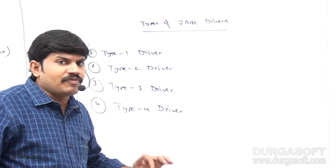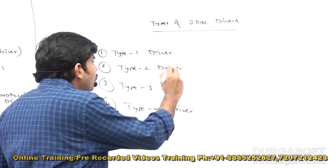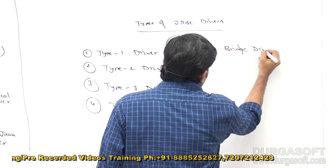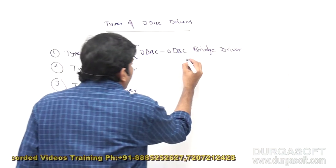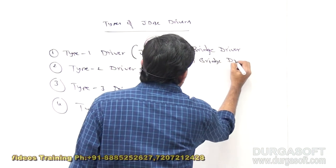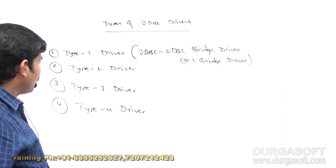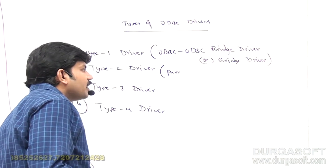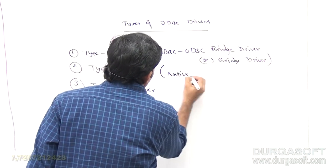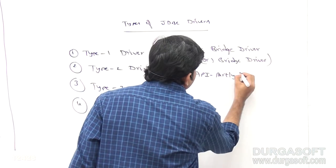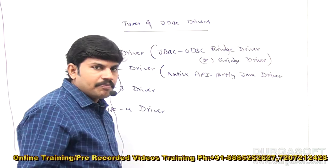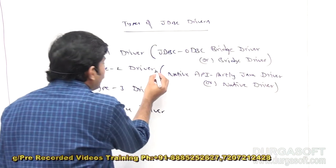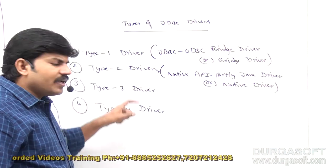These four types also have other names based on their functionality. Type 1 driver is also known as the JDBC-ODBC Bridge Driver, or simply the Bridge Driver. Type 2 driver is also known as the Native API Partly Java Driver, or simply the Native Driver — because it internally uses some native libraries.